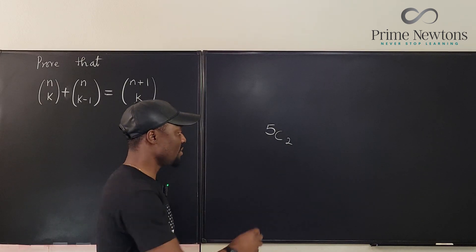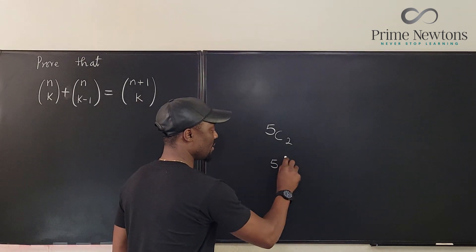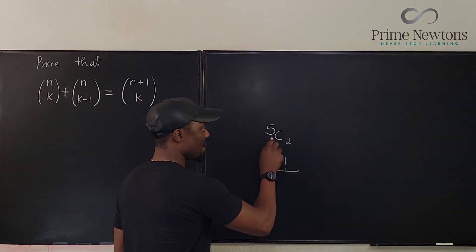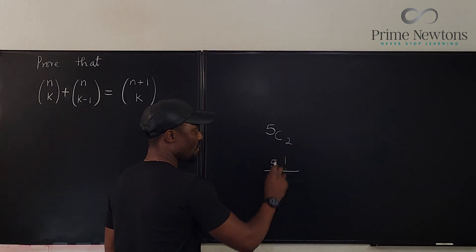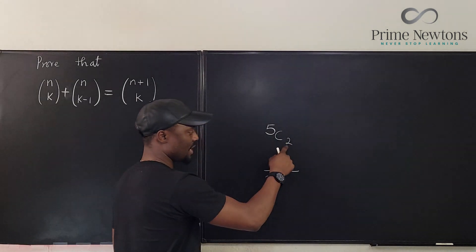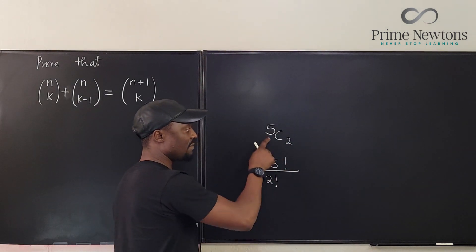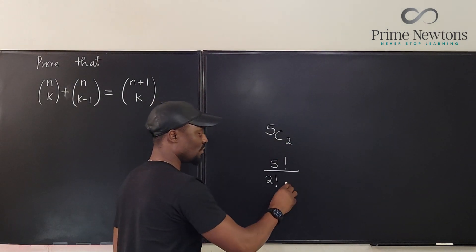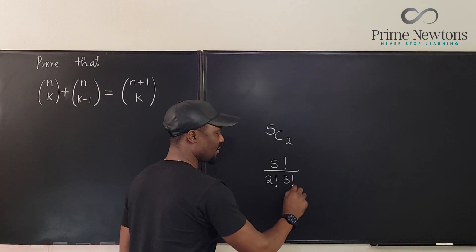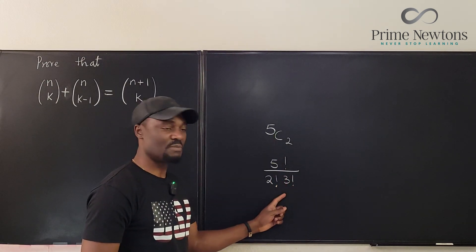This basically means you have 5 factorial over 2 factorial, multiplied by 5 minus 2 factorial, which is 3 factorial. That's what this means.